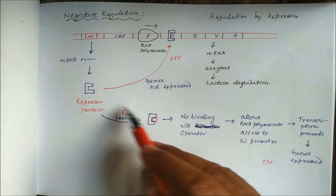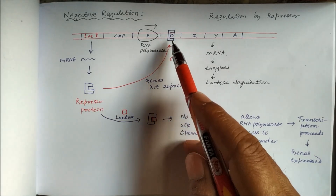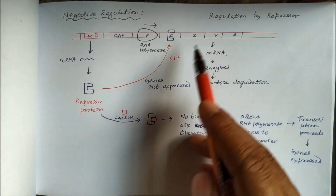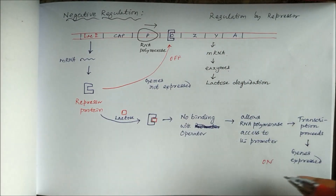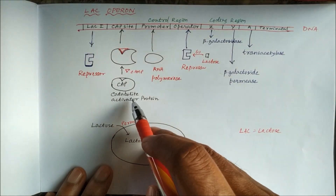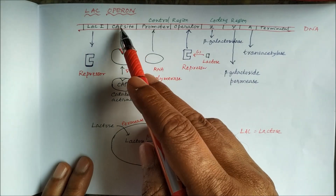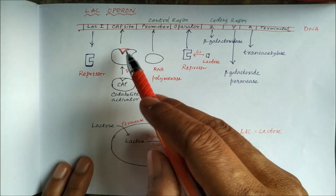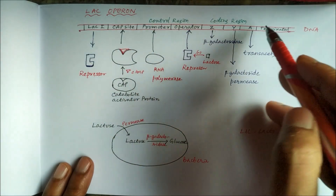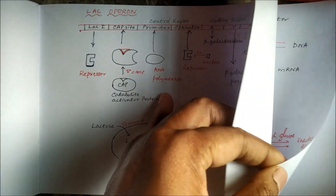This repressor binding is negative regulation. In the presence of lactose, lactose binds to the repressor protein so there is no binding of the repressor with the operator, allowing RNA polymerase to access the genes — transcription and gene expression occur. There is also positive regulation via a catabolite activator protein (CAP), which requires the coactivator cyclic AMP. CAP binds to the CAP site and facilitates the binding of RNA polymerase to the promoter, promoting gene expression.